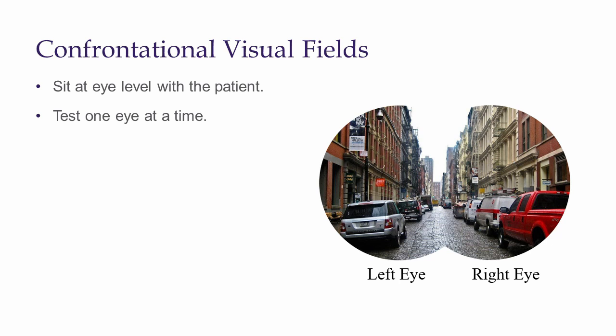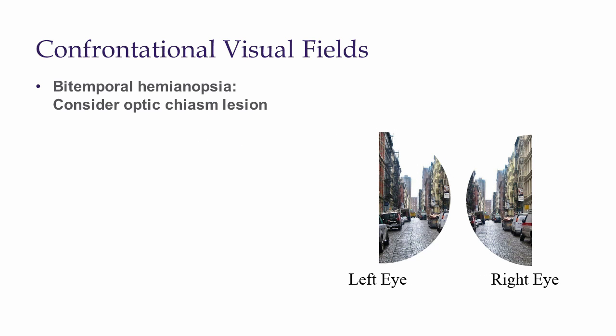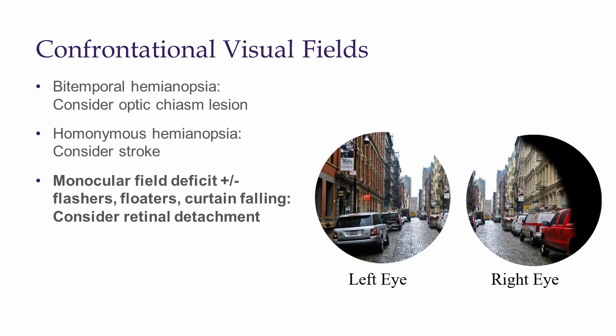Test one quadrant at a time by holding up a different number of fingers each time. If you identify that a patient cannot see your fingers in the right and left temporal fields, this is known as bitemporal hemianopsia and should raise immediate suspicion that a lesion is compressing the optic chiasm. The most common cause of bitemporal hemianopsia is a pituitary tumor. Strokes can also present with visual field abnormalities. A monocular visual field deficit accompanied by symptoms of flashes, floaters, or a curtain coming across the vision may herald a retinal detachment.